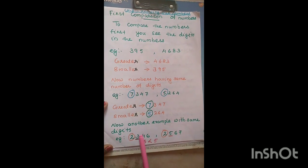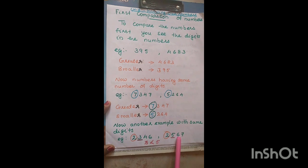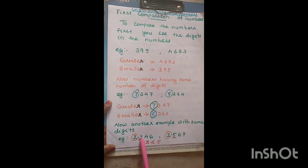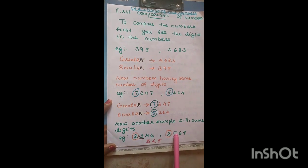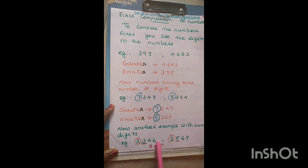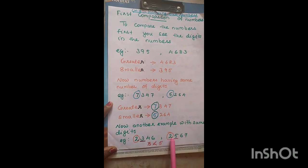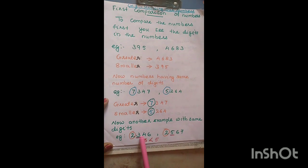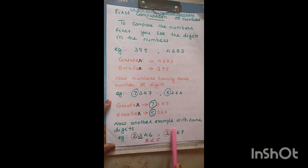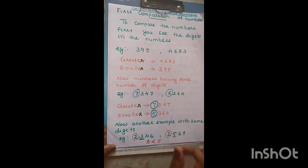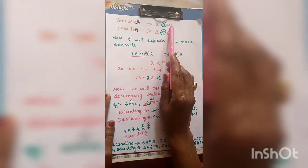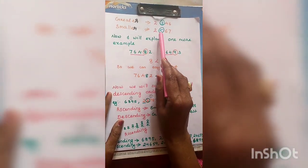Another case: both numbers have the same digits and the first digit is also the same. What do you do? You have to compare the second digits — whichever second digit is greater, that number is the greater number. For example, 2346 and 2567 — both first digits are the same. So we compare the second digits: 3 and 5. Since 5 is the greater digit, 2567 is the greater number and 2346 is the smaller number.